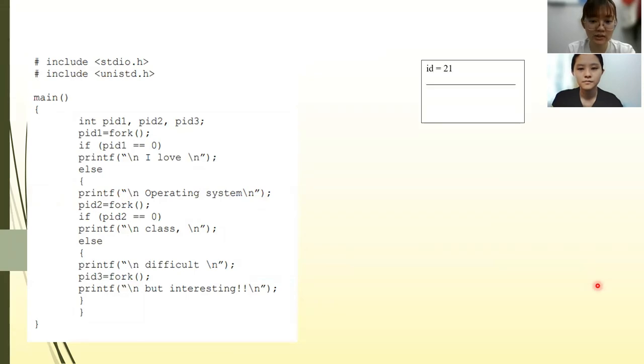By following the code, fork system call is used to create a process. The line PID1 equals to fork creates a child process with PID1 equals to 22.